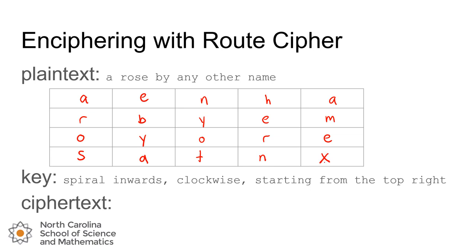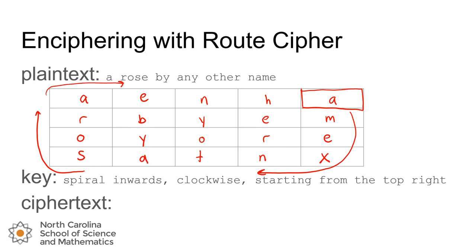Now to create the cipher text we'll use the key. In this case the key is a written description that tells you how to move through the grid to collect your letters to form the cipher text. This key reads: spiral inwards clockwise starting from the top right. So starting in the top right box where there's the letter a, we'll move inwards clockwise through our characters to figure out the cipher text message.